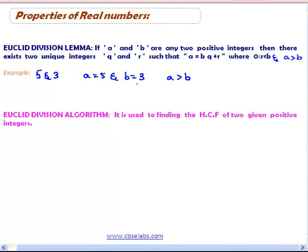Now we can apply Euclid division lemma to these positive integers 5 and 3. By applying Euclid division lemma we can write 5 is equal to 3 times 1 plus 2